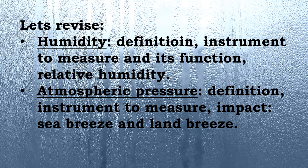Let's revise what we have read. First, we read about humidity — the definition, and note that the spelling on screen has an error, so please mark it correctly. We covered the instruments to measure humidity: the dry bulb thermometer and the wet bulb thermometer, how they function, and we also read about relative humidity. After that, we read about atmospheric pressure — its definition, the instrument to measure it which is the barograph or barometer, and the impact of atmospheric pressure. It creates pressure zones: high pressure and low pressure areas, and because of these zones, breezes are formed — sea breeze and land breeze.